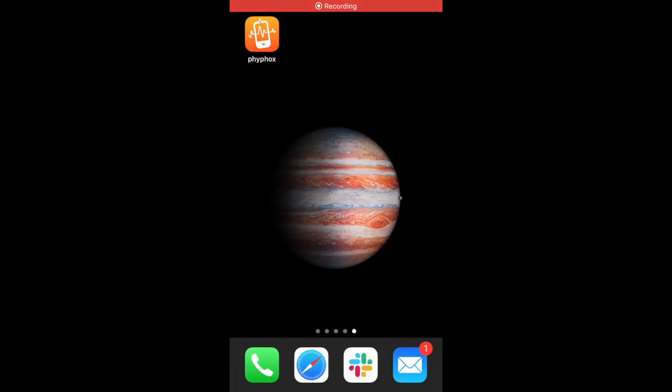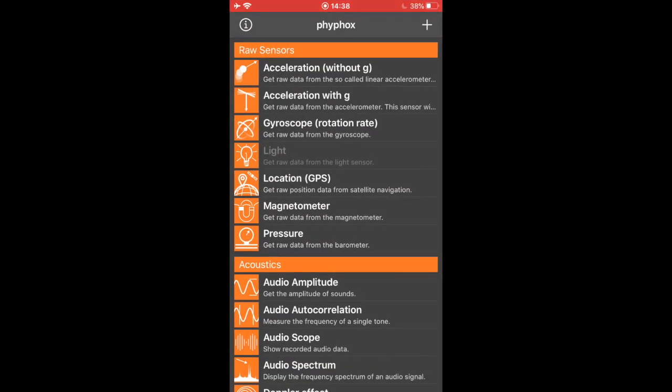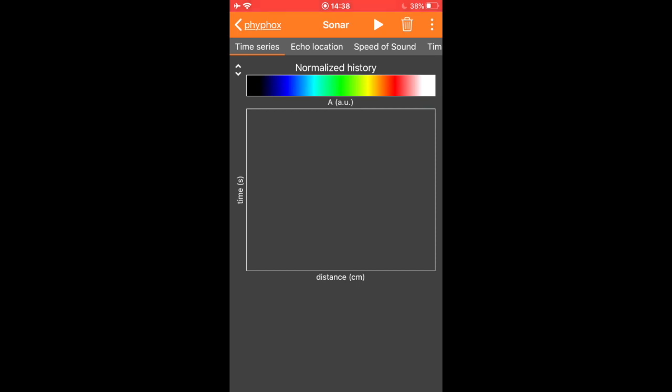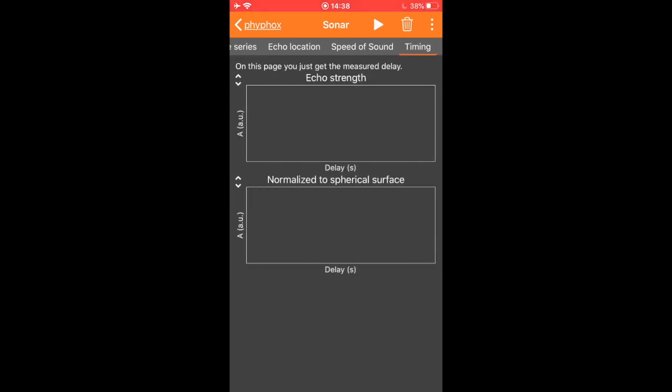To collect data for the sonar experiment, go ahead and open the Phyphox app on your phone. This will give you several different experiments that you could do with your phone's sensors. We will want to select sonar. In sonar, we have several different modes and we want to choose timing. With this, we are ready to collect data, focusing on the top graph, which will plot the amplitude of signal versus the delay time.